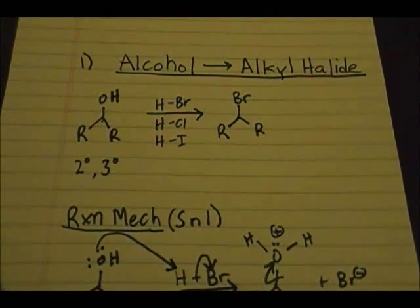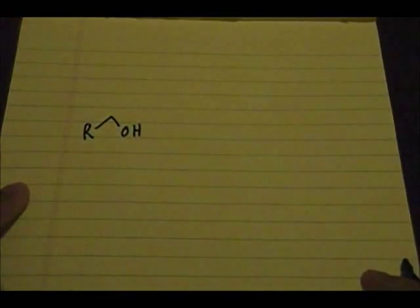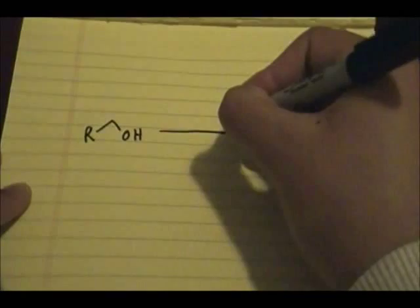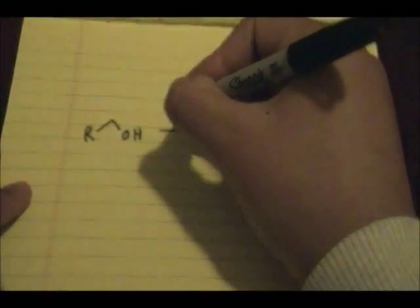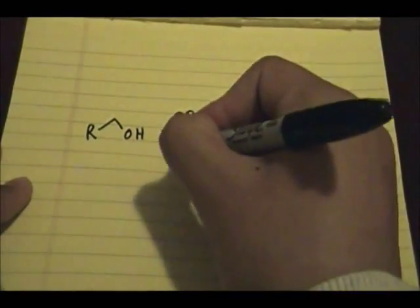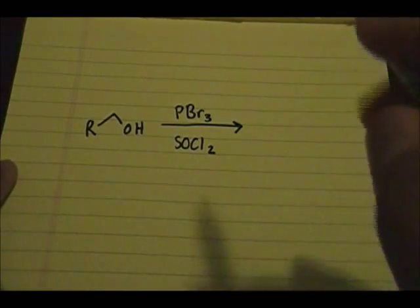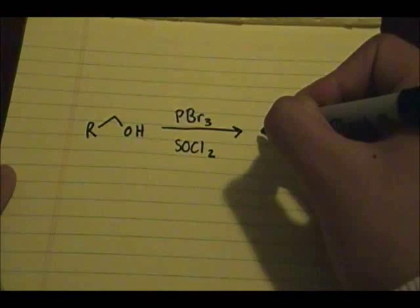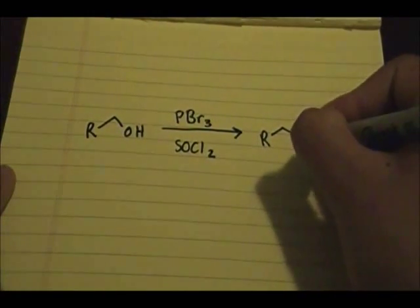Now let's focus on what if you had a primary alcohol — what would happen, and how would it change from a secondary or tertiary? If you have a primary alcohol and want to change it to an alkyl halide, the reagents you can use are PBr3 if you want to substitute the OH for Br, or SOCl2. I'll focus on PBr3, and you'll form the primary alkyl halide with Br.